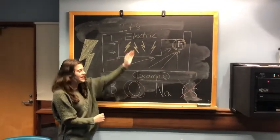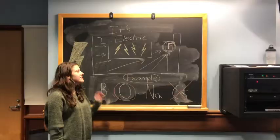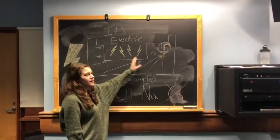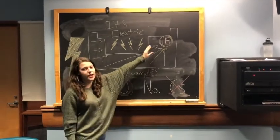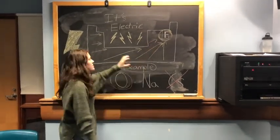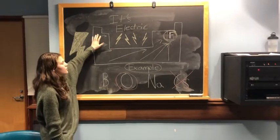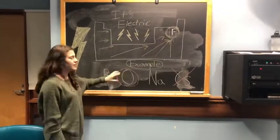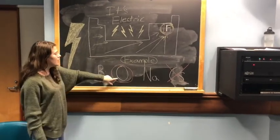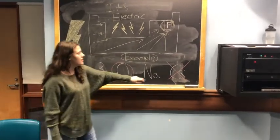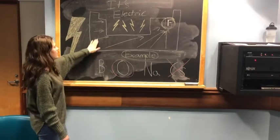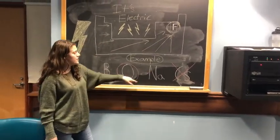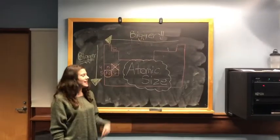There's another trend you should look for: electronegativity. The most electronegative element is fluorine, and whatever element is closest to fluorine has the highest electronegativity. An element far from fluorine will have lower electronegativity. For example, oxygen has a higher electronegativity than cesium, because cesium is far from fluorine whereas oxygen is right next to it.